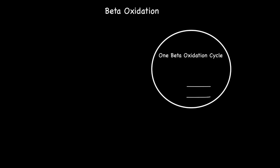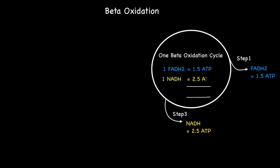As you might be aware, each beta-oxidation cycle generates one FADH2 at step one and one NADH at step number three. If we apply the ATP exchange rates for each of these reduced coenzymes, it is clear to see that one turn of beta-oxidation generates a potential of four ATPs as a direct result of the production of both these reduced coenzymes.